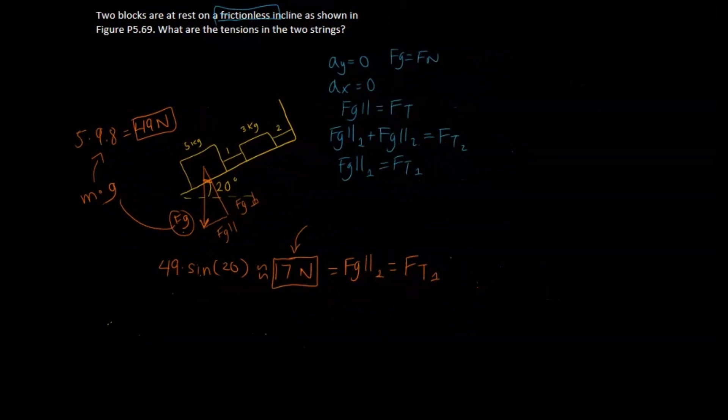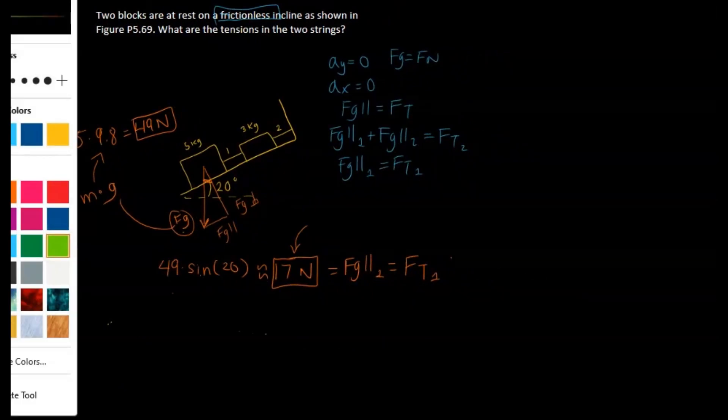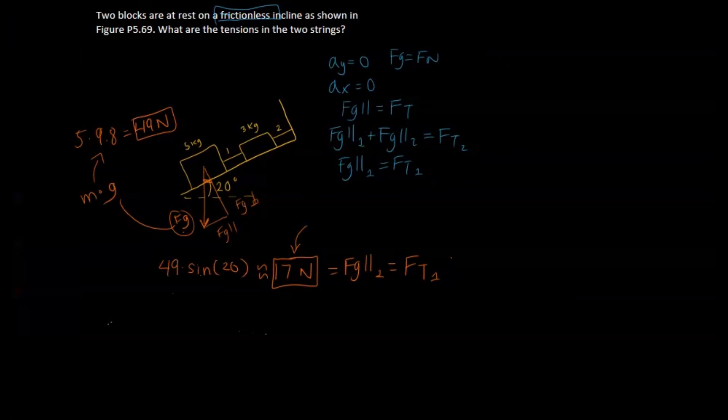So we already know one part of it. We know that Fg parallel of the first block plus Fg parallel of the second block is equal to force of tension for string 2. So we have to find force of gravity parallel of the second block and we can just use the same process we used before.